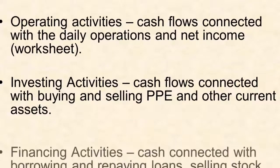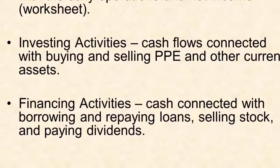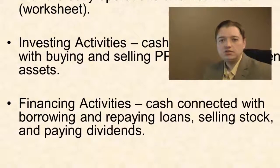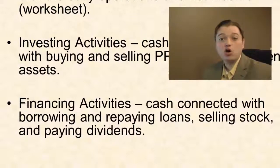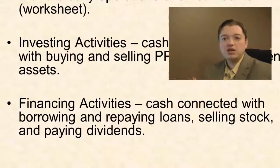The last section is our financing activities. This is the cash connected to borrowing and repaying loans, selling stock, and paying dividends — the money back to our investors. Debt holders and equity holders: we're paying them back — at least the long-term debt holders — and the money that investors give us and the money that we give back to them goes here.